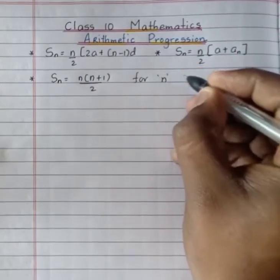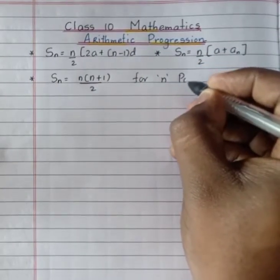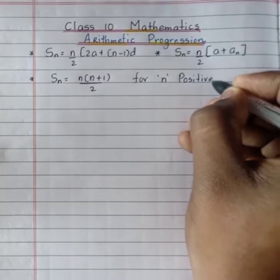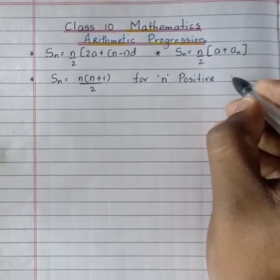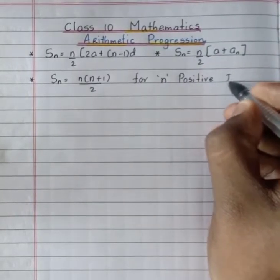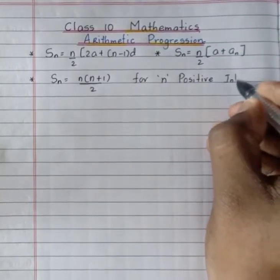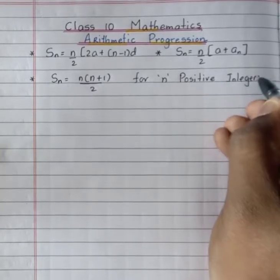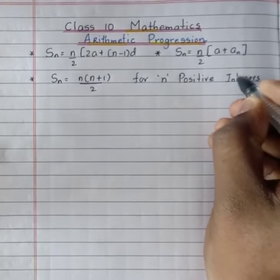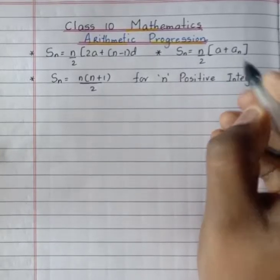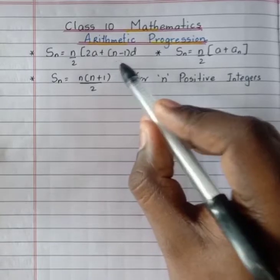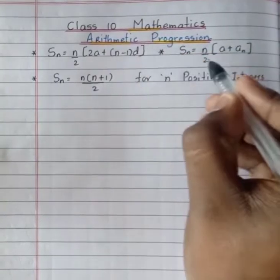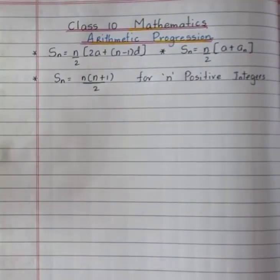The sum of n positive integers is given by the formula Sn equals n times n plus 1 divided by 2. Now we will continue with the exercise.